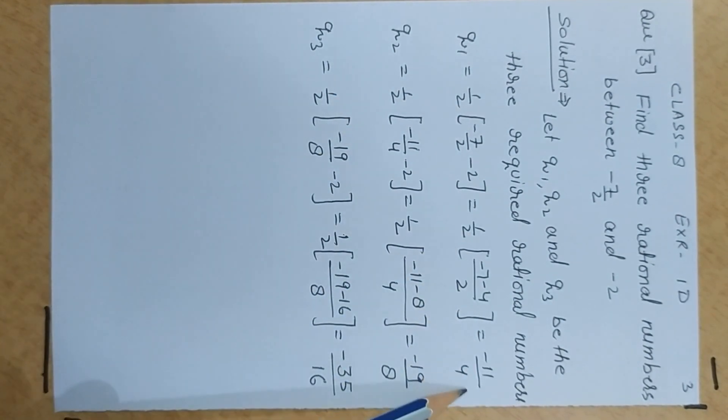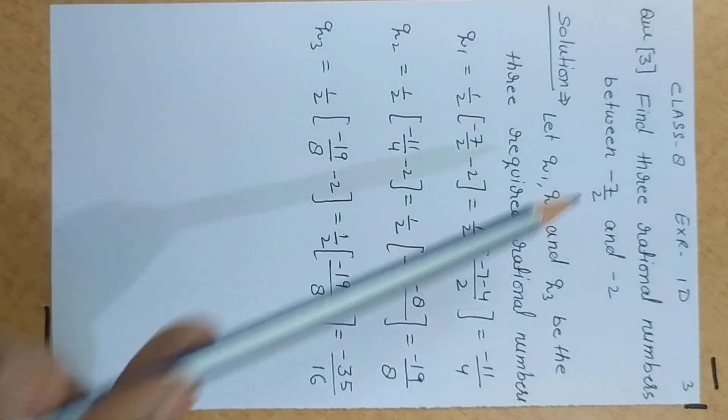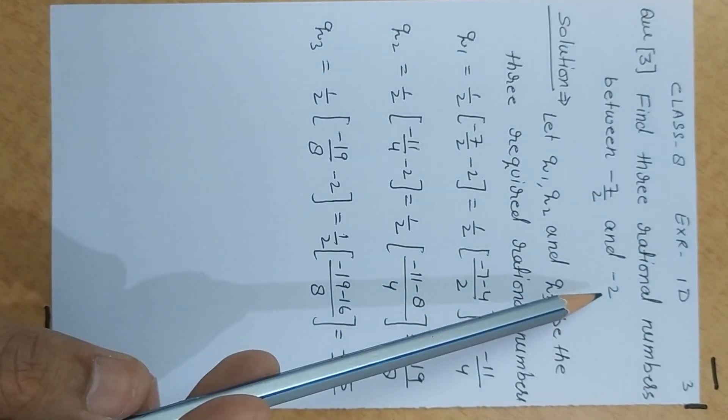Dividing by 2 gives minus 11 by 4. Now, here you can find more numbers. What you can do? This and second term we can take it and this and first term we can take it. Means, minus 11 by 4 and minus 7 by 2, and minus 11 by 4 and minus 2.